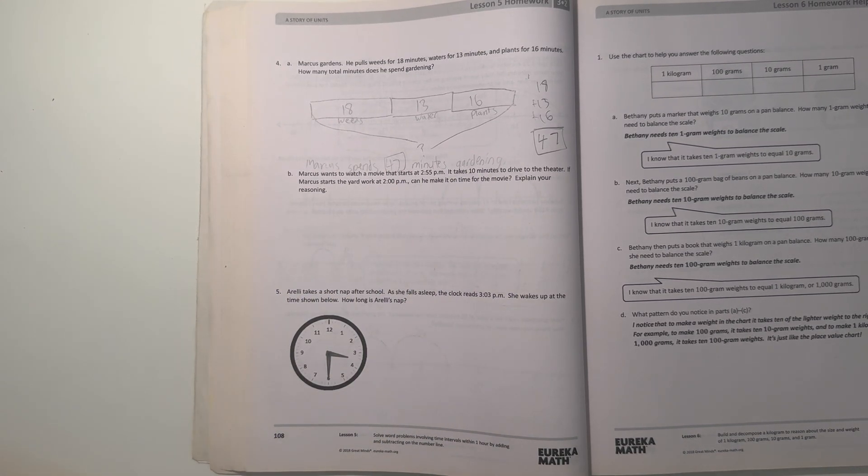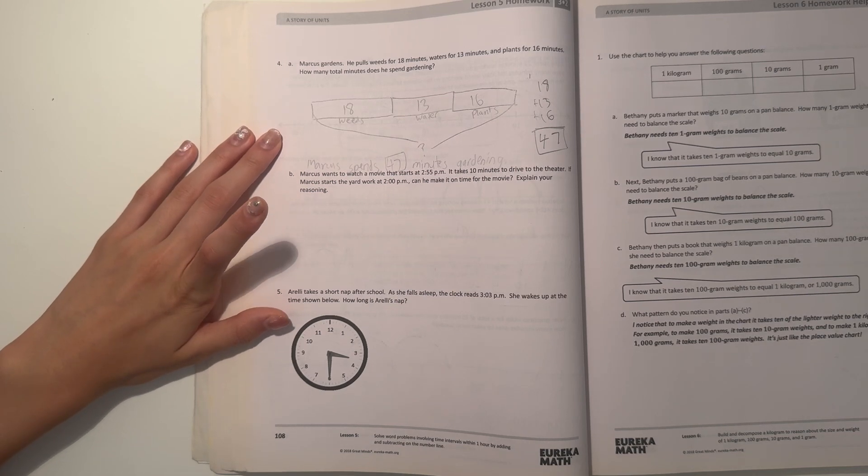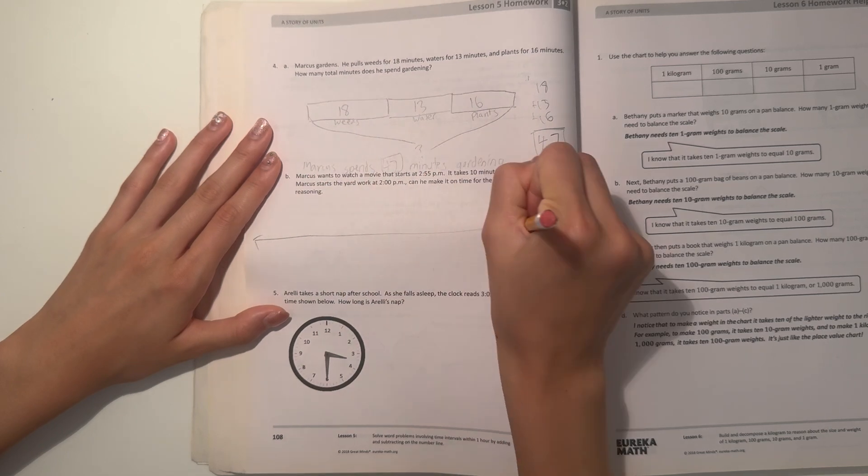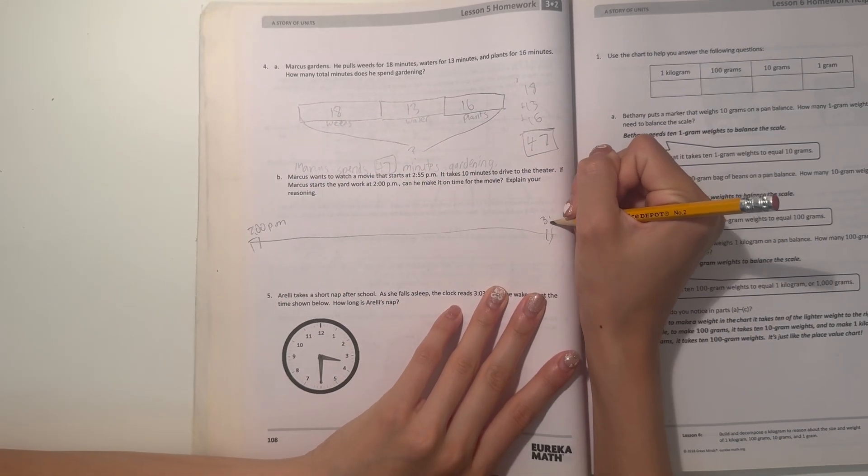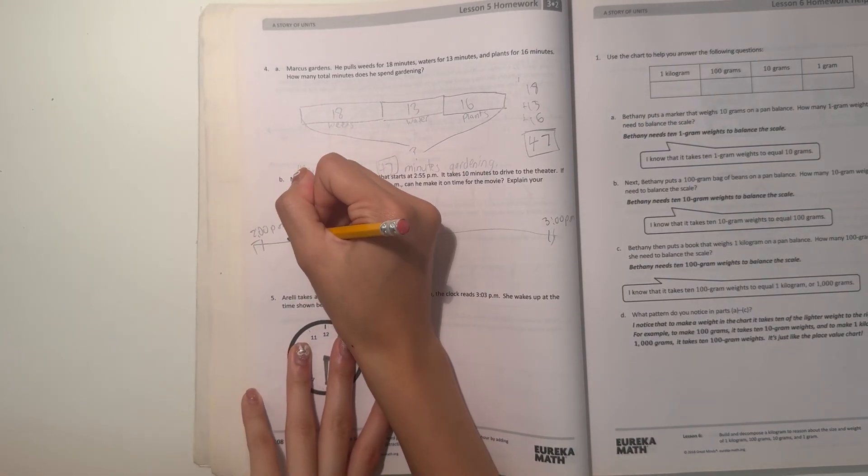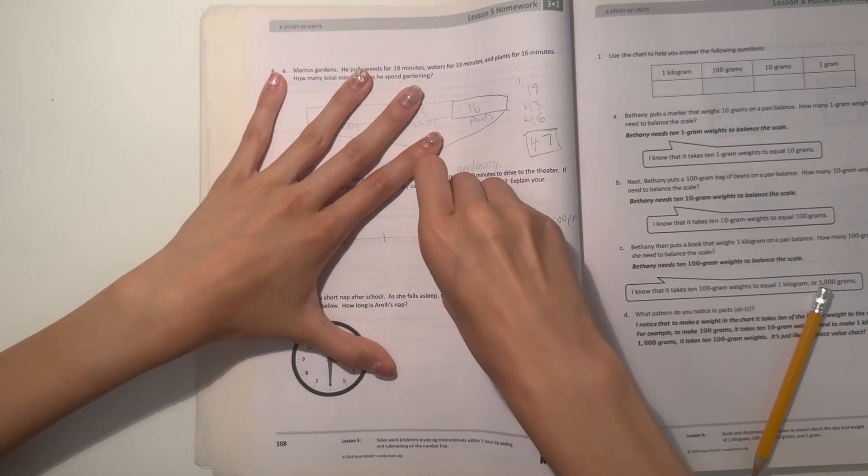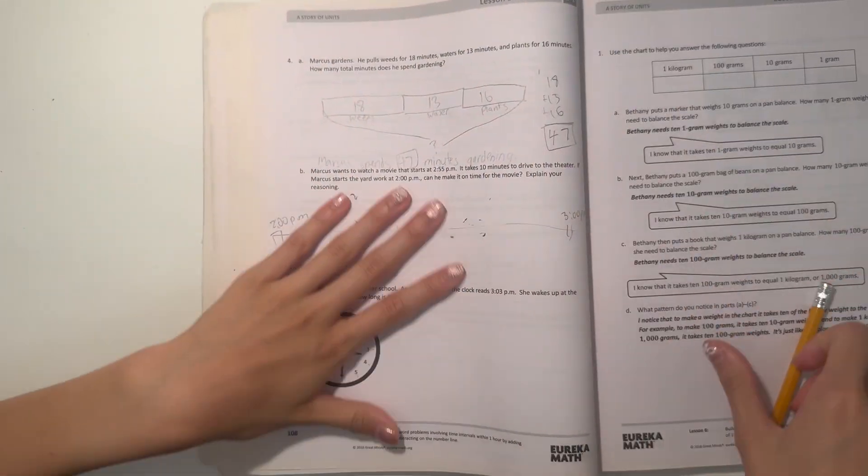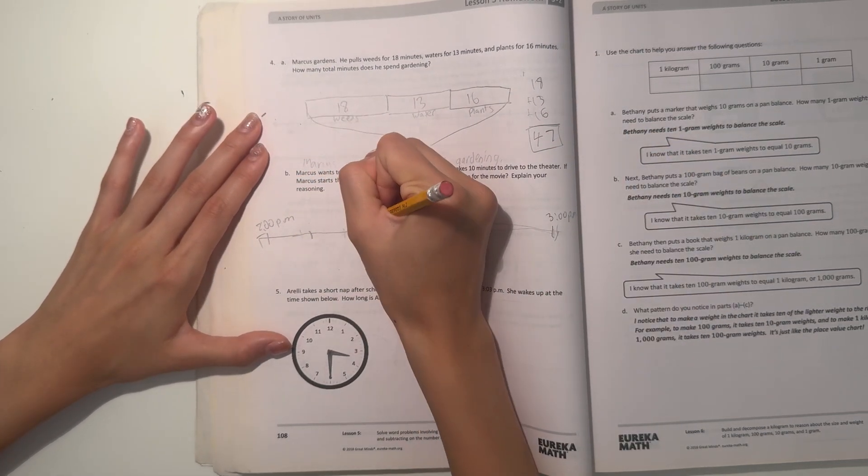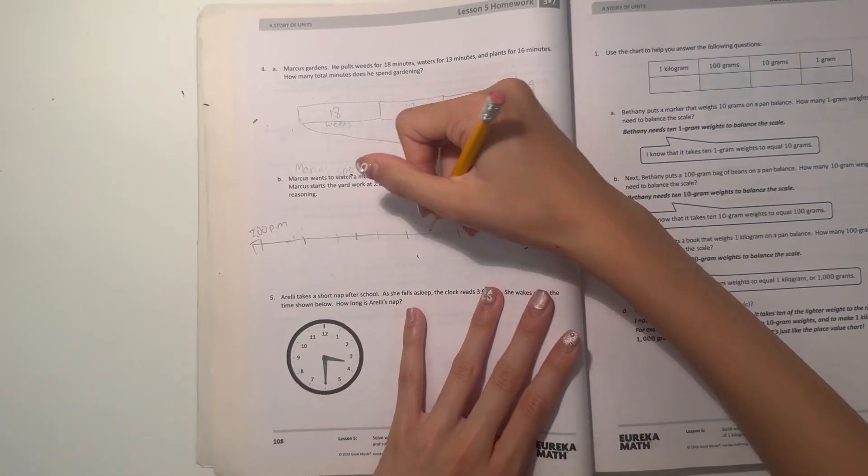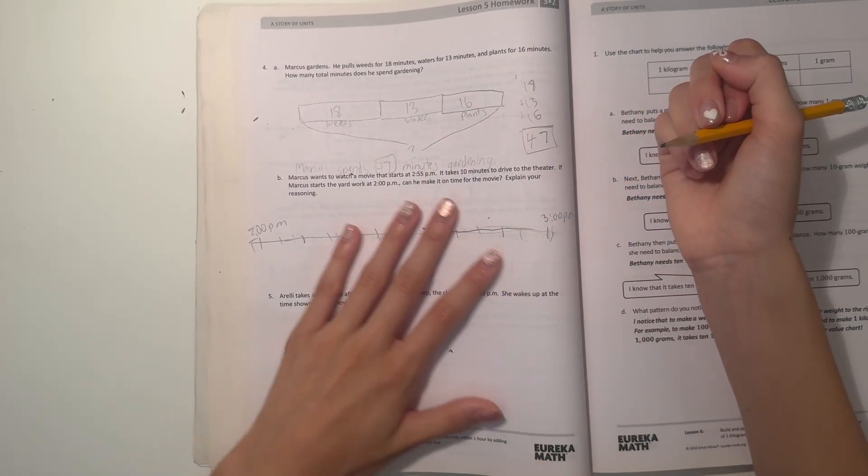Alright. So this is part two of our problem. So let's see, we know he spends 47 minutes gardening. So if he starts his yard work at 2 p.m. Let's make a number line. So it's kind of like a timeline. Let's start at 2 p.m. And this will be 3 p.m. That is very uneven. Let's redraw those ticks. So 10, 20, 30, 40, 50. And let's draw our ticks in between.